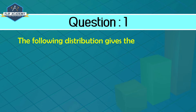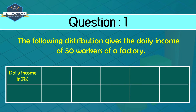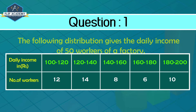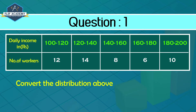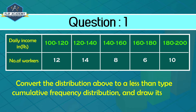The following distribution gives the daily income of 50 workers of a factory. Daily income in rupees: 100–120, 120–140, 140–160, 160–180, 180–200. Number of workers: 12, 14, 8, 6, 10. Convert the distribution to the less than type cumulative frequency distribution and draw its ogive.